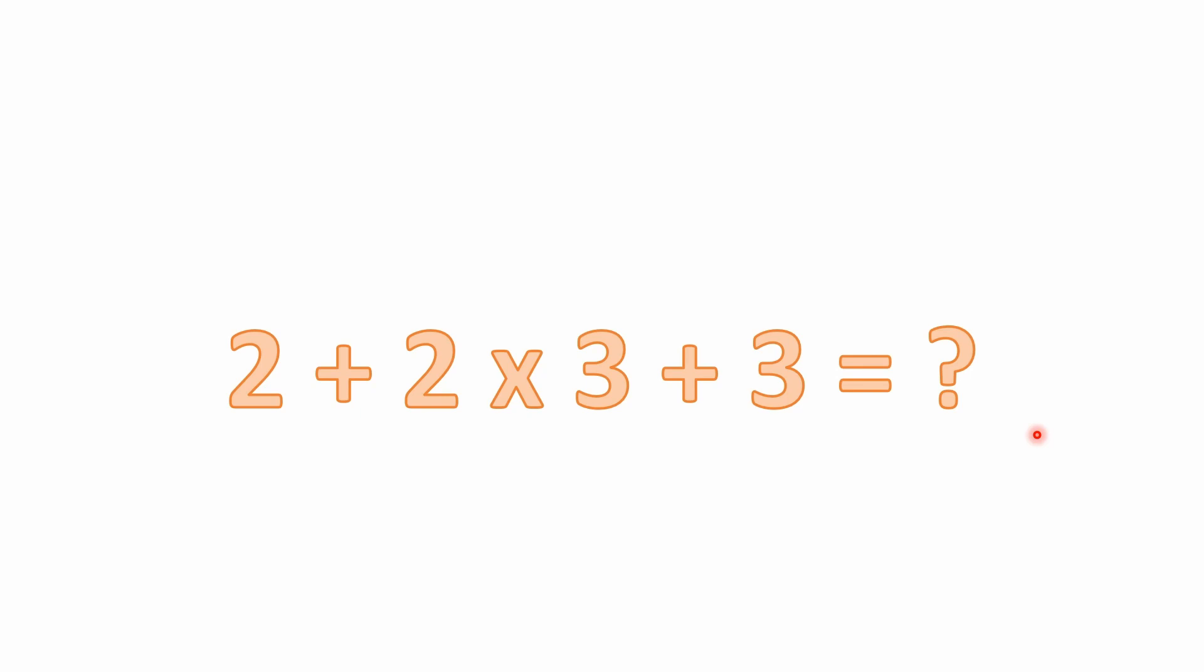It's 2 plus 2 times 3, so it's not an x. We're not solving for x here. That's actually supposed to be a multiplication sign. So 2 plus 2 times 3 plus 3 equals what? A very simple problem, but I see a lot of people get it wrong.